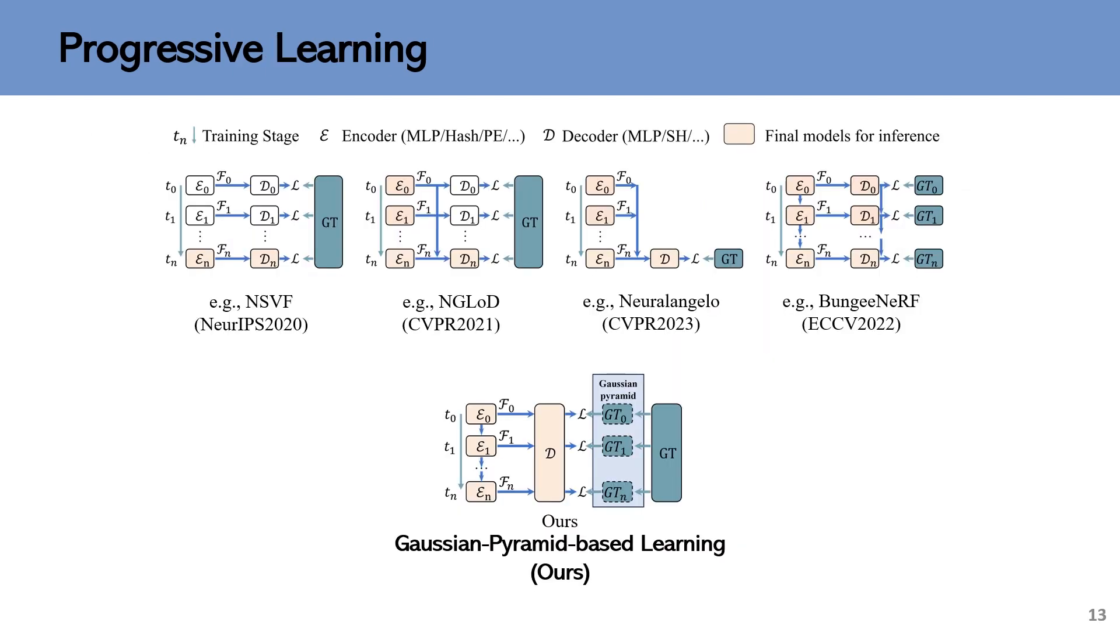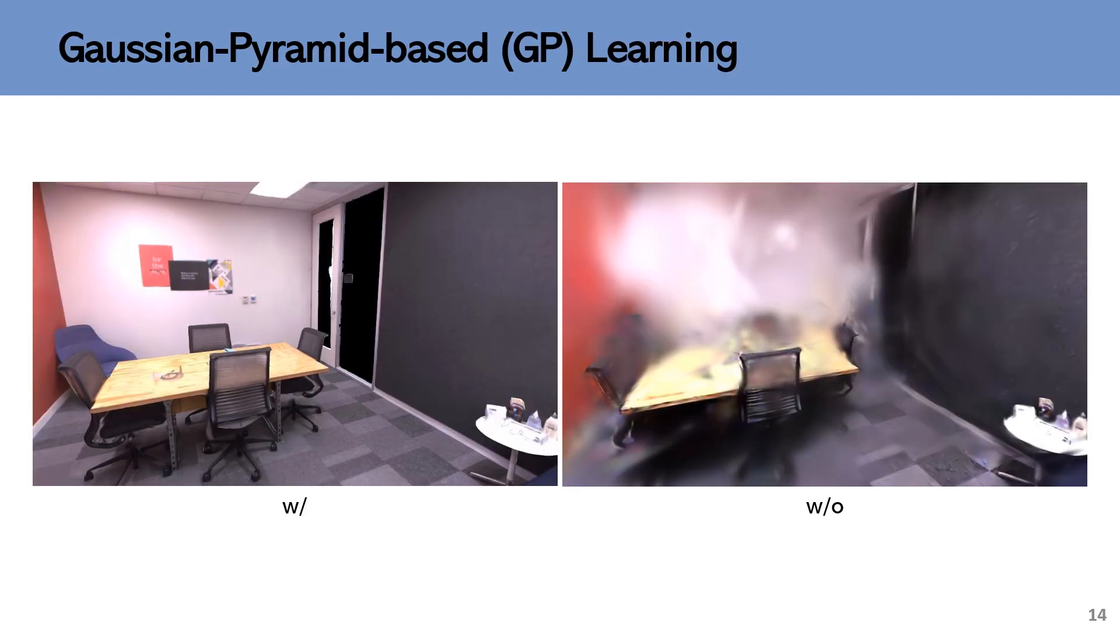Moreover, we propose a new progressive training method based on Gaussian pyramid to facilitate the acquisition of multi-level features online. For more detail and discussion, please refer to our main paper. GP learning significantly improves the performance, particularly for monocular cameras. Without GP learning, inaccurate hyper primitives cannot be thoroughly optimized such that they become occluders.